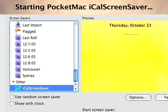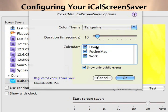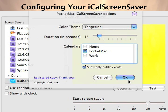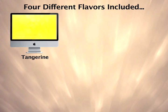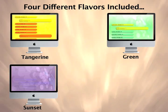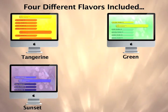PocketMac iCal Screensaver comes equipped in four different color options. You can also select the specific calendars you want to display in iCal Screensaver, and you can mark an option to show only public events from your calendar. This will exclude any private events.